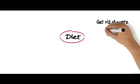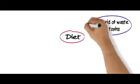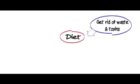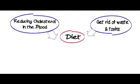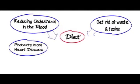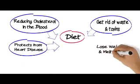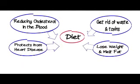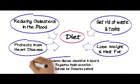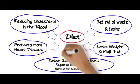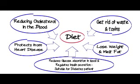Gum arabic — the elixir of life — is characterized as a diet vital and beneficial to human health, and helps to get rid of waste and toxins. Gum arabic works to lower blood pressure by reducing cholesterol in the blood, and gives protection from the risk of heart disease. It helps to lose weight and melt fat, as it reduces the rate of absorption of glucose in the blood, and regulates insulin secretion to suit the liberation of glucose into the bloodstream for patients with diabetes.